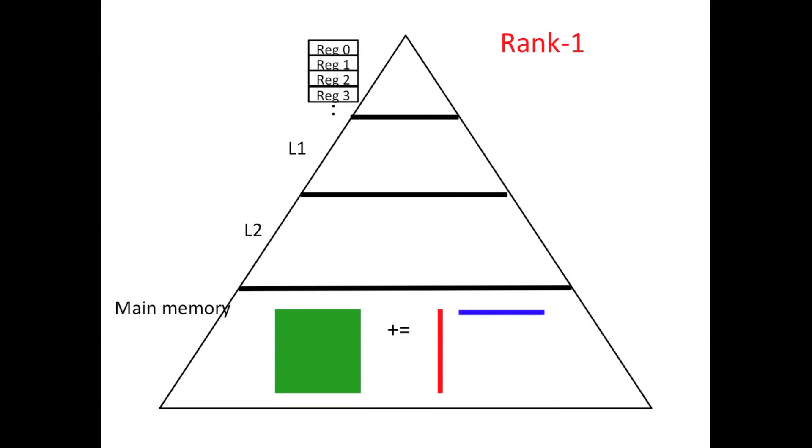Similarly, the rank one update is an extremely important operation. What about that operation? Well, here we have to bring each element of C, the green box, in from main memory and then write it back out once it has been updated. So in this case, we perform 2N squared memory operations for 2N squared floating point operations. So the ratio is one to one. That's even worse than the matrix vector multiply. Again, we don't have to be quite as concerned about the vectors because we can bring those into the L1 cache and keep them there and or we can place an element in a register and reuse that many, many times.